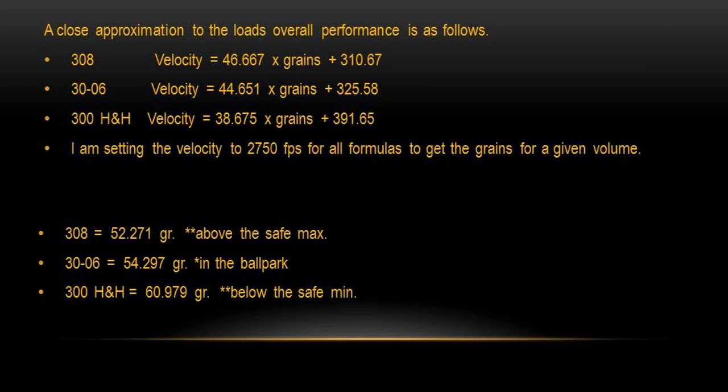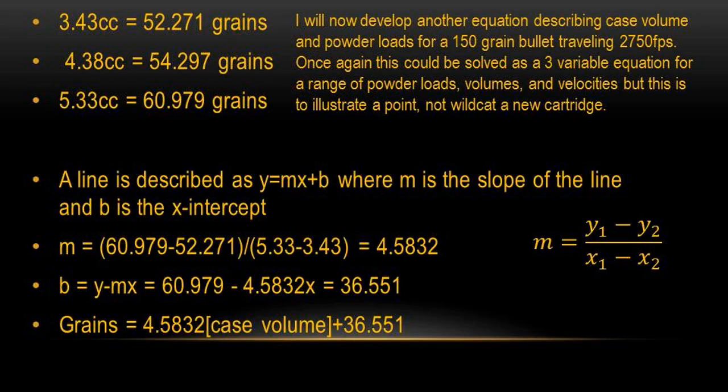A line is described as y equals mx plus b where m is the slope of the line and b is the x-intercept. m equals 4.5832, b equals 36.551, which yields the equation grains equals 4.5832 times case volume plus 36.551.